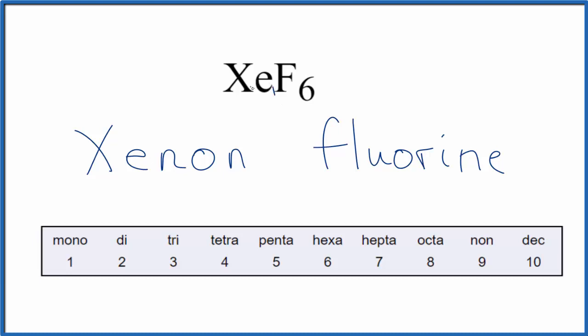For xenon, we have one xenon atom, but because it's the first name, we don't use mono on the first name. For fluorine, we need to change the -ine to -ide.